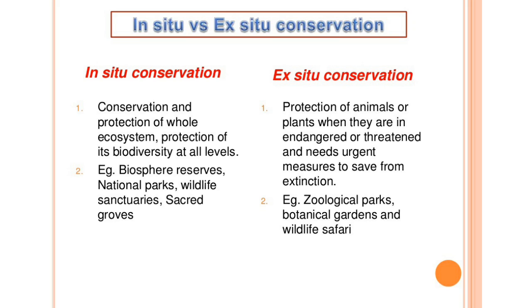Ex-situ conservation is the protection of animals or plants when they are endangered or threatened and need urgent measures to save them from extinction. Examples include zoological parks, botanical gardens, and wildlife safaris.